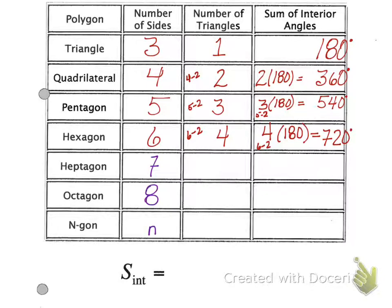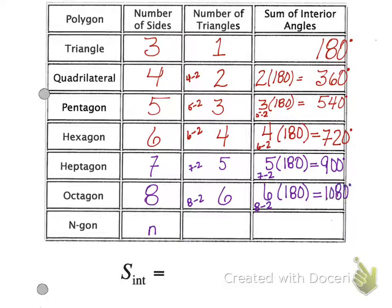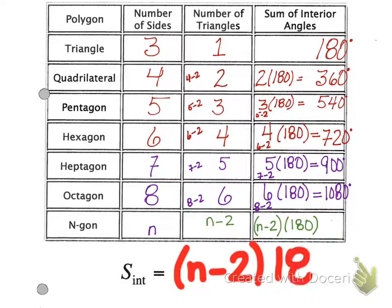All right, so we have the heptagon, octagon, and then n-gon — n is the number of sides. For seven sides, we do seven minus two to get five triangles, and five times 180 gives us 900. For eight sides, eight minus two is six triangles, and six times 180 is 1080. And last, n minus two — so any number of sides: if you have a 50-gon, it's 50 minus two, giving 48 triangles. The formula for any shape is (n minus two) times 180. That is a very big, important formula.